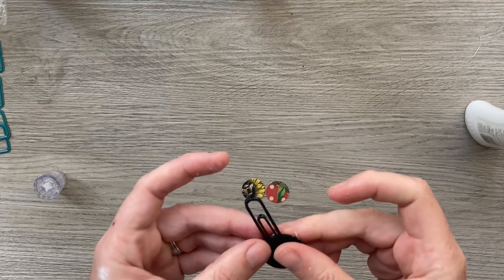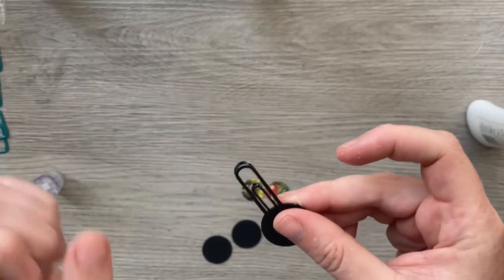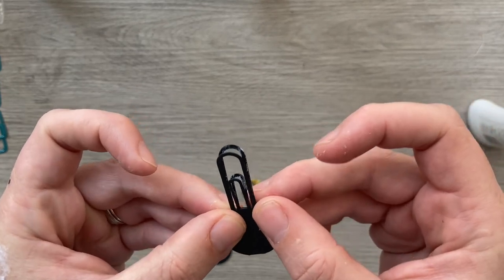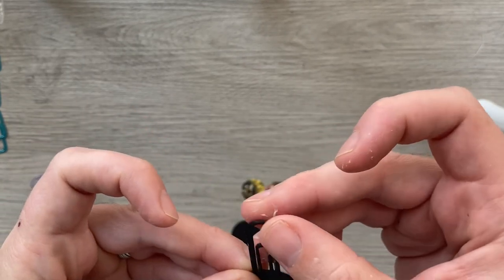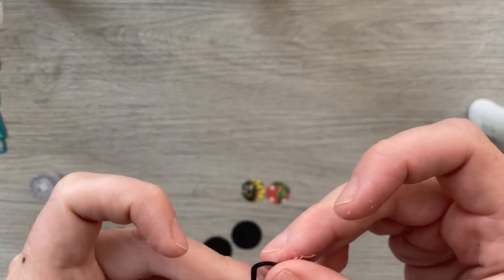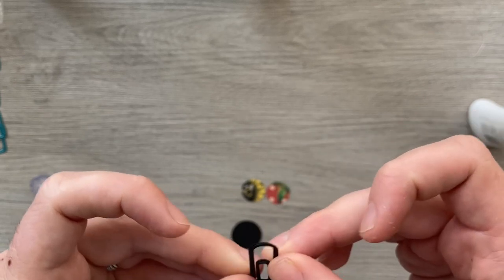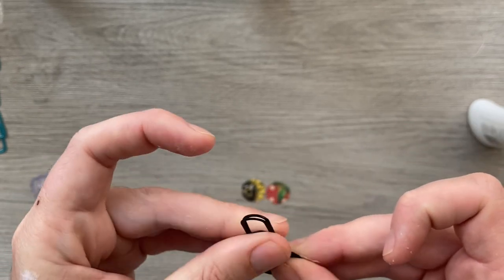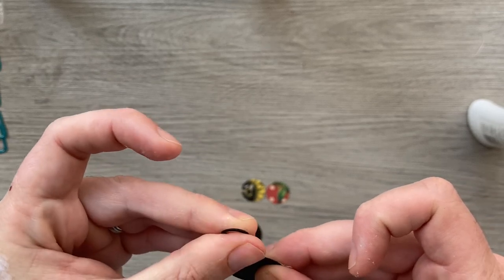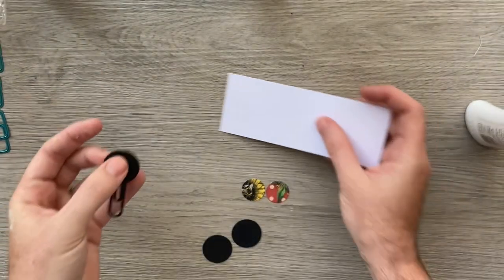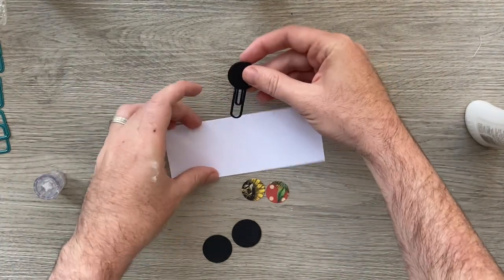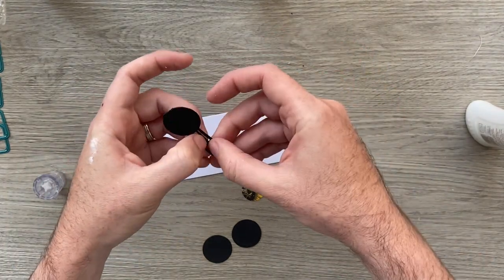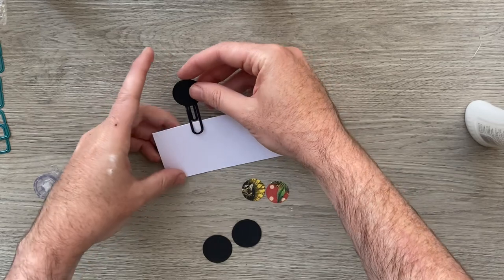And then you're going to line it up and make sure you're getting these pieces aligned. Let's just move them. And then that has made your paper clip.